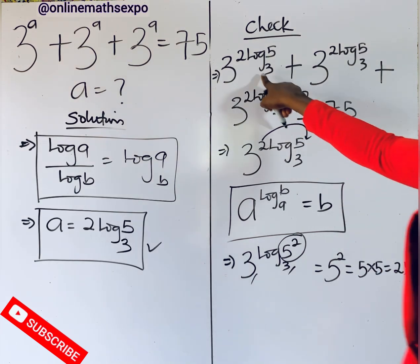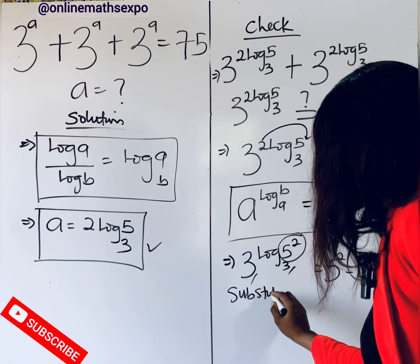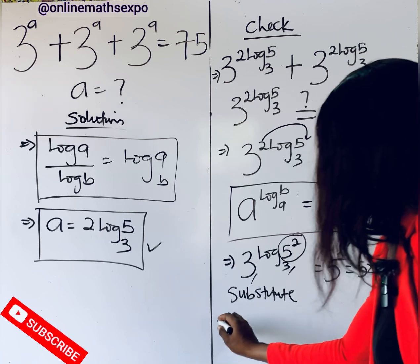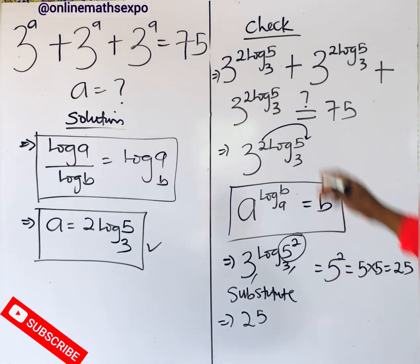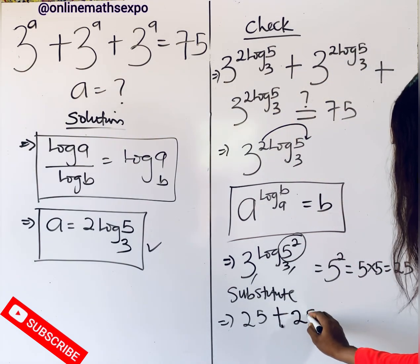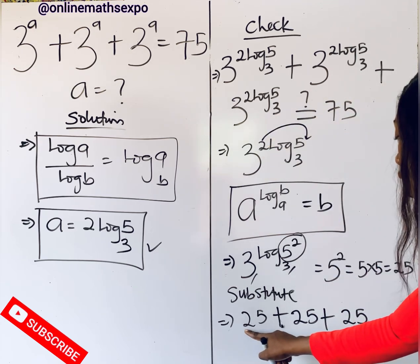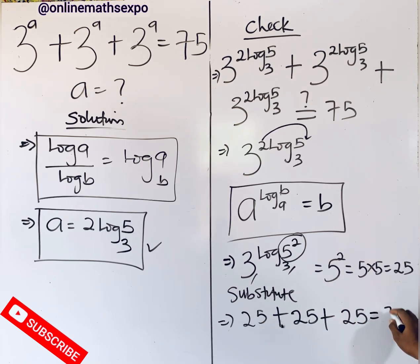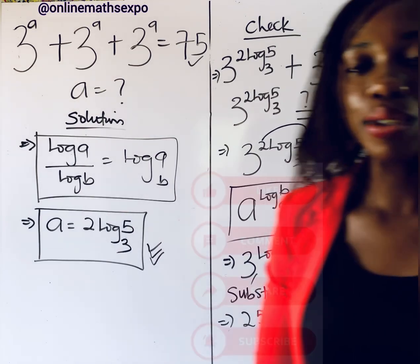So this value here is 25. Substituting back: 25 plus 25 plus 25. When you add these three you get 75, which is what we have at the right side of the equation. So this confirms that the value of a is correct. I hope you learned a lot!